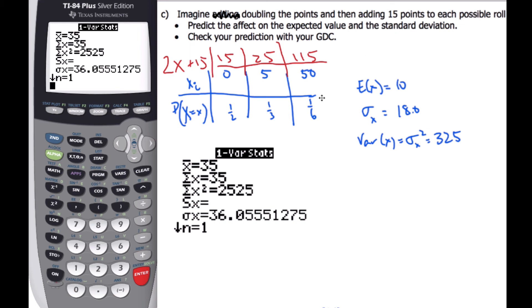However, if I look at the standard deviation, the standard deviation is 36. That's only double the standard deviation. Standard deviation is the spread, how spread out the numbers are. Well, multiplying by 2 will spread out numbers.